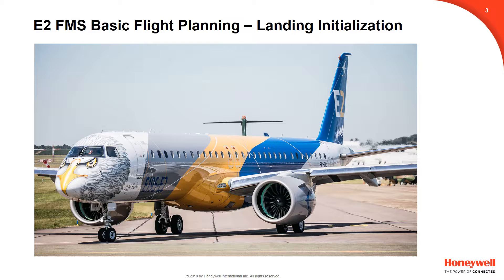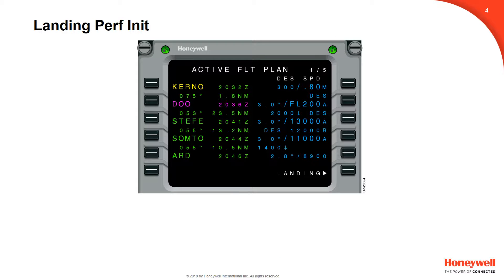The landing initialization, or the task of performing the landing, should be completed after the crew gets the destination weather. Landing pages can be accessed through the perf index and from the descent page. Normally, after the aircraft is airborne and a landing runway has been activated in the FMS, the pilot will access the landing pages using the landing prompt found on the active flight plan page, line 6 right.